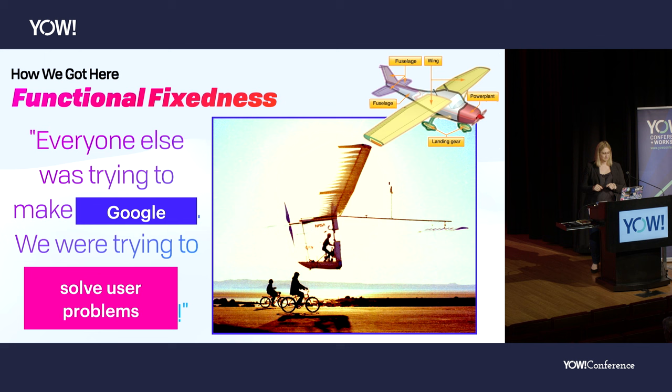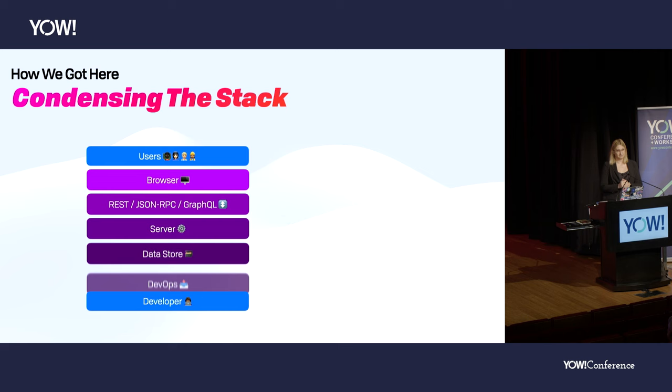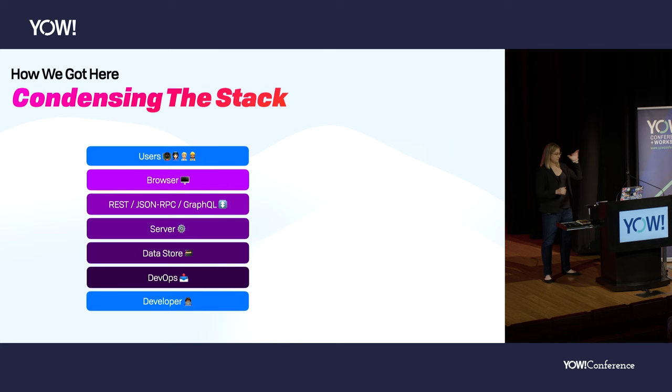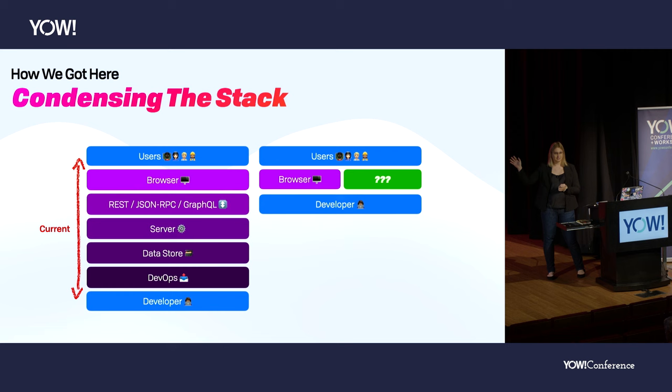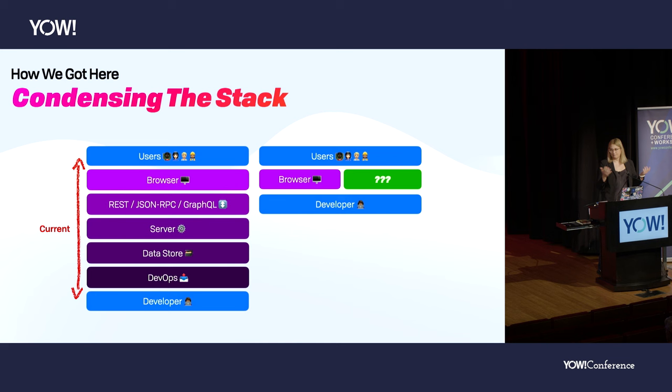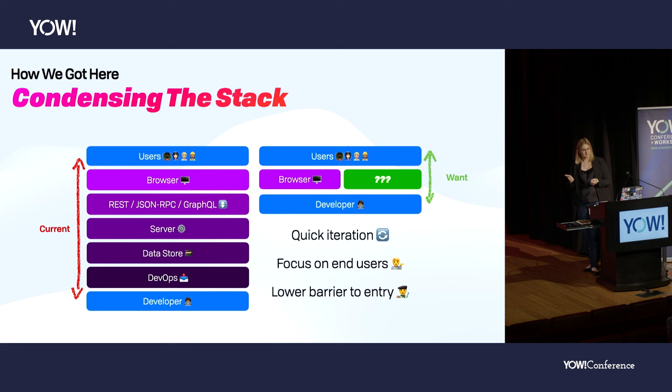Today, if you want to put together an app, between your users and your developers there's this huge stack of things you have to make decisions about — from platform APIs to your database to your server stack. This is a lot of stuff to build, maintain, and train people to use. What I want is some magic set of APIs — kind of like iOS or Android provides most things — but for the networking layer of the web, so I can be closer to my users, have fast iteration, and lower the barrier to entry.